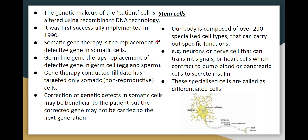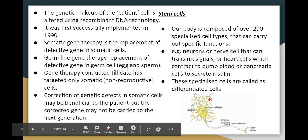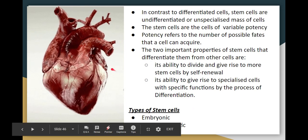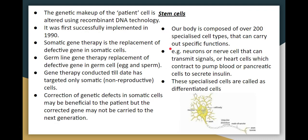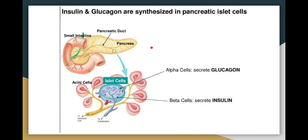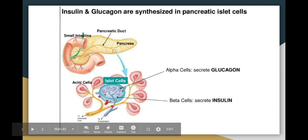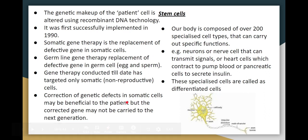Next is stem cells. In our body, there are about 200 specialized cell types, each with one function. For example, neurons transmit signals, heart cells pump blood through contraction, and pancreatic cells — specifically alpha cells in the islets of Langerhans — secrete glucagon, while beta cells secrete insulin. These are called differentiated cells.